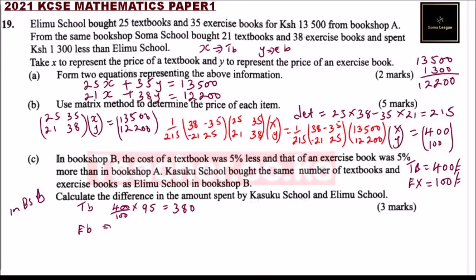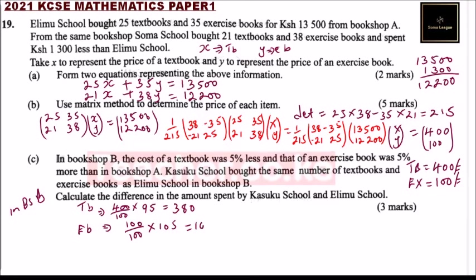For the exercise book in bookshop B, it was five percent higher than in bookshop A. It was costing 100 shillings in bookshop A, so you multiply by 105 over 100, giving 105 shillings, since 100 and 100 cancel out.